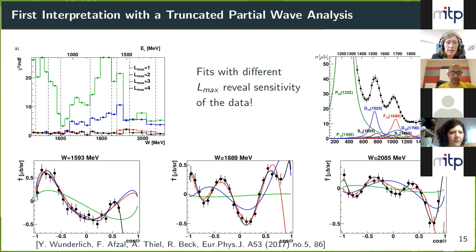At low energy, truncation at l_max=1 is insufficient but all higher orders describe the data well. At mid-range energy (~1.8 GeV), l_max=2 is no longer sufficient and l_max=3 (the red curve) is needed. At higher energy bins the structure becomes more complicated and l_max=4 is required to describe the data. By this approach you gain fresh insight into the sensitivity of the measured data.